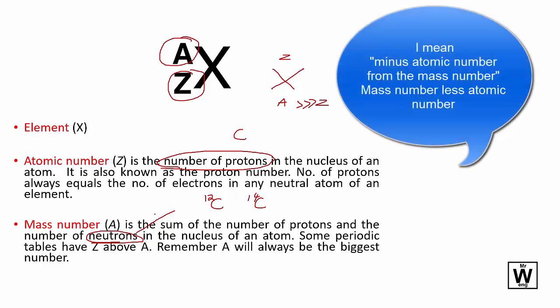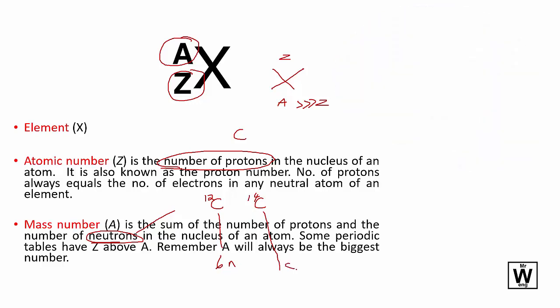You subtract the atomic number from the mass number. So for carbon-12, that's 12 minus 6, which gives 6 neutrons. For carbon-14, 14 minus 6 gives 8 neutrons.